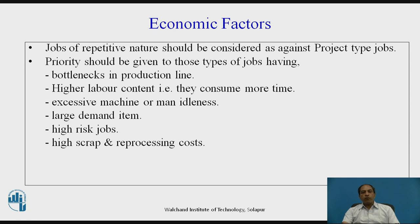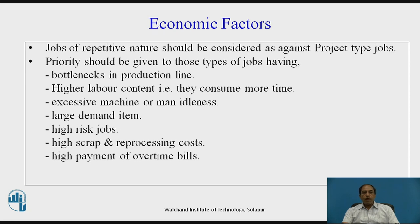There are jobs where wastage, scrap, or reprocessing cost is very high. For example, turning a shaft from a larger diameter to a very small diameter results in wasting both material and machining cost — high scrap is obvious. Such cases should be considered first for major study. Also, where the company has to pay overtime to operators, the root cause is mainly higher production time or more waiting of jobs, either due to higher labor content or bottlenecking. Such jobs should also be considered on a priority basis.